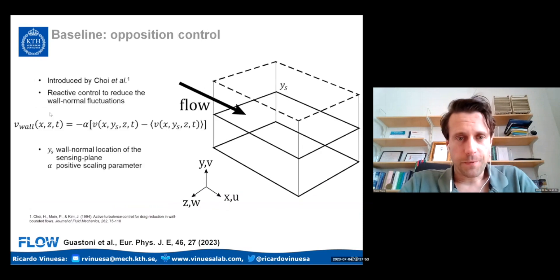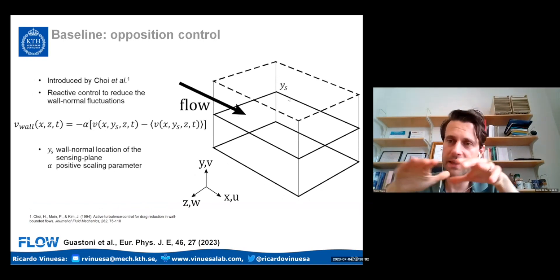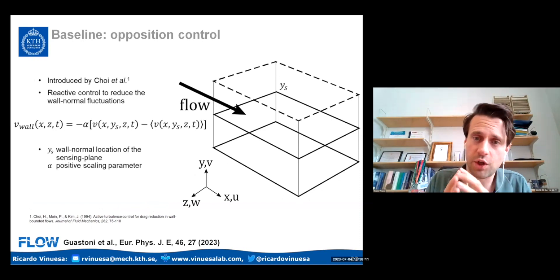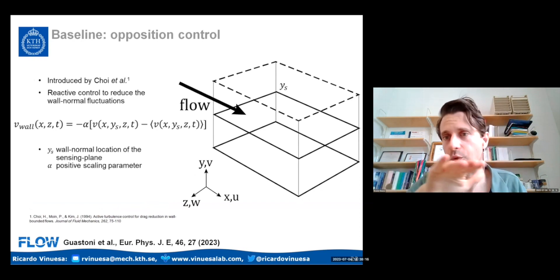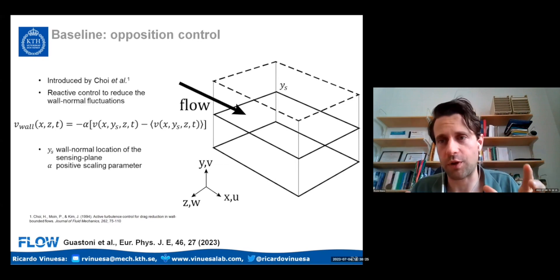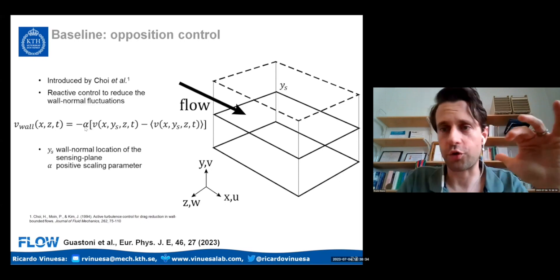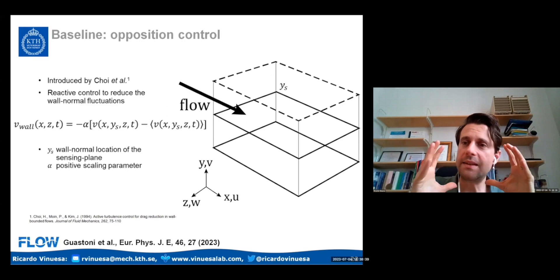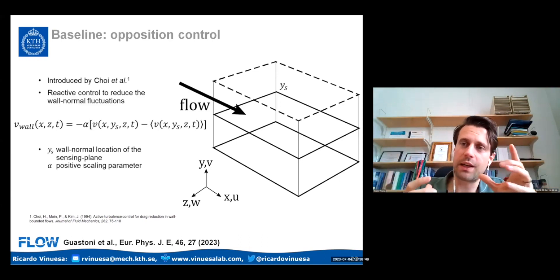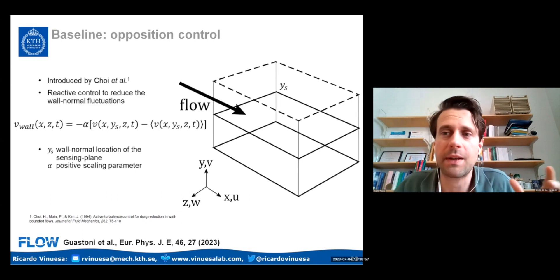Opposition control relies on the following concept: I sense a particular plane — typically the near-wall region around Y+ 15, where the strongest fluctuations occur. I sense the wall-normal fluctuations at Y+ 15, and at the wall I impose a flow control opposing those fluctuations: alpha times minus one, with alpha typically equal to one. So if in the near-wall region I have a positive wall-normal fluctuation, I impose a negative wall-normal fluctuation of the same magnitude, trying to kill the near-wall fluctuations and hopefully relaminarize the flow.